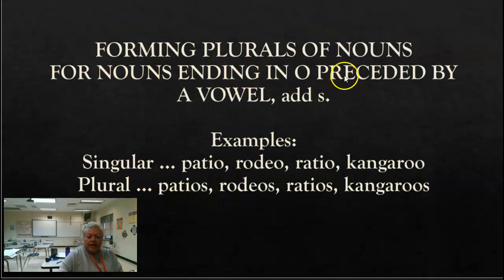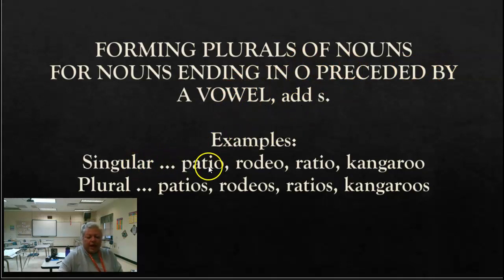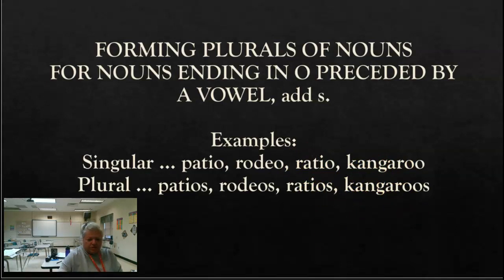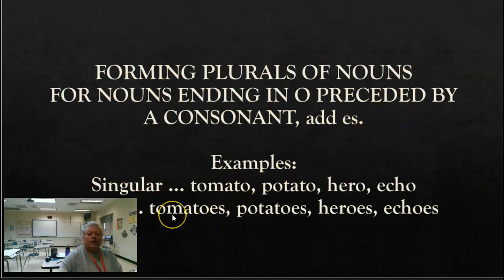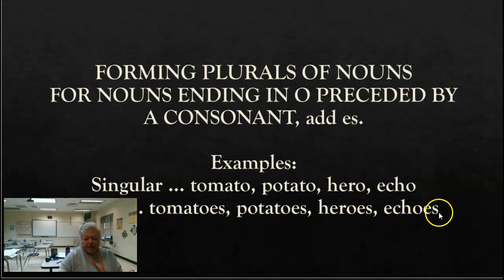For nouns ending in O, the vowel O, preceded by a vowel — so a vowel and an O — you add an S. Singular: patio, rodeo, ratio, kangaroo. You just add an S: patios, rodeos, ratios, kangaroos. For nouns ending in O preceded by a consonant, you add ES: tomato — tomatoes, potato — potatoes, hero — heroes, echo — echoes.